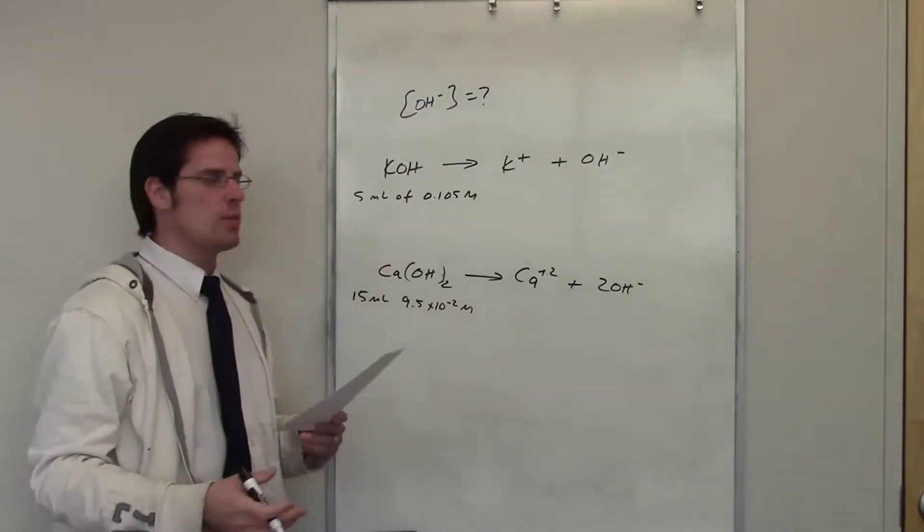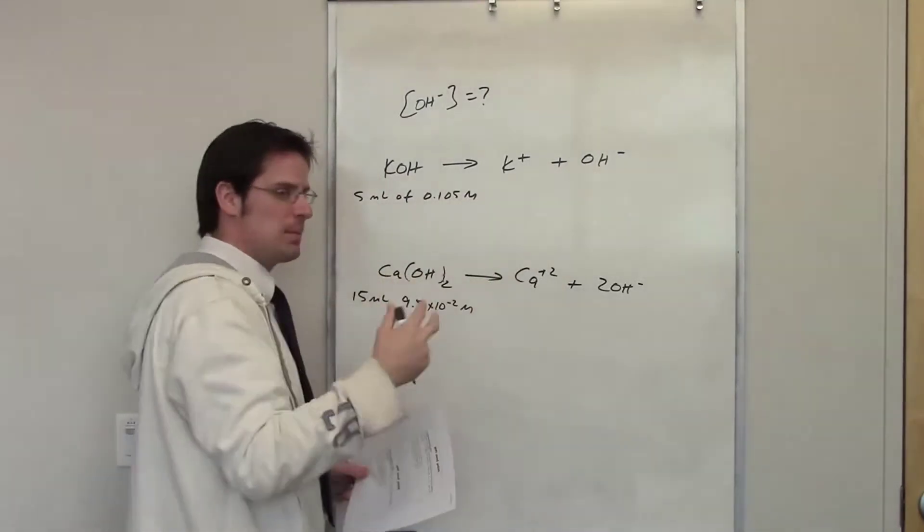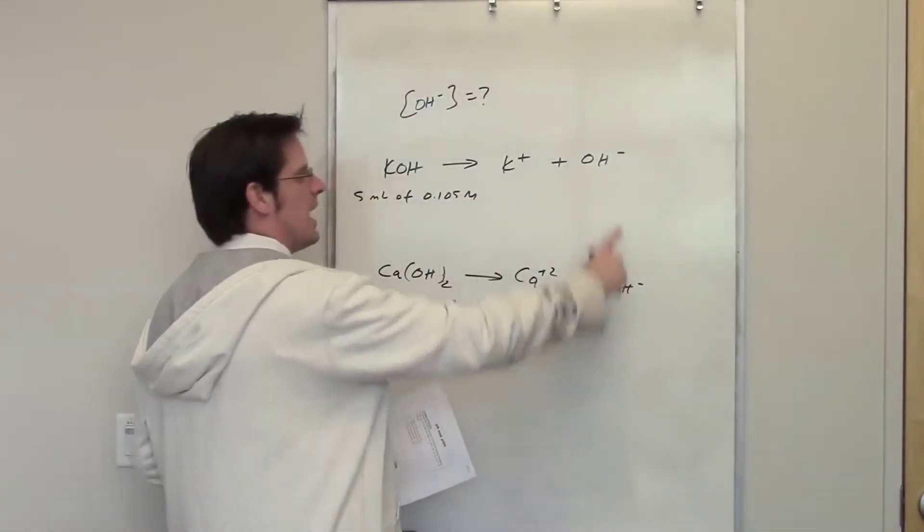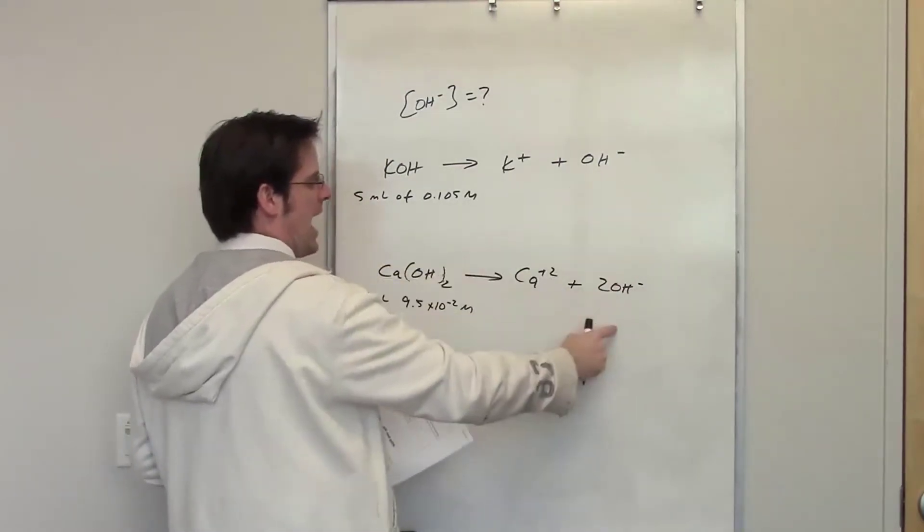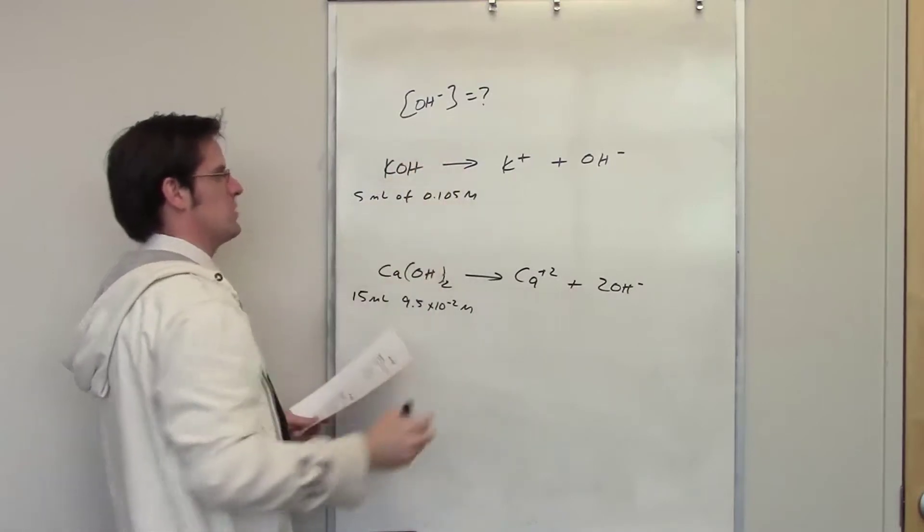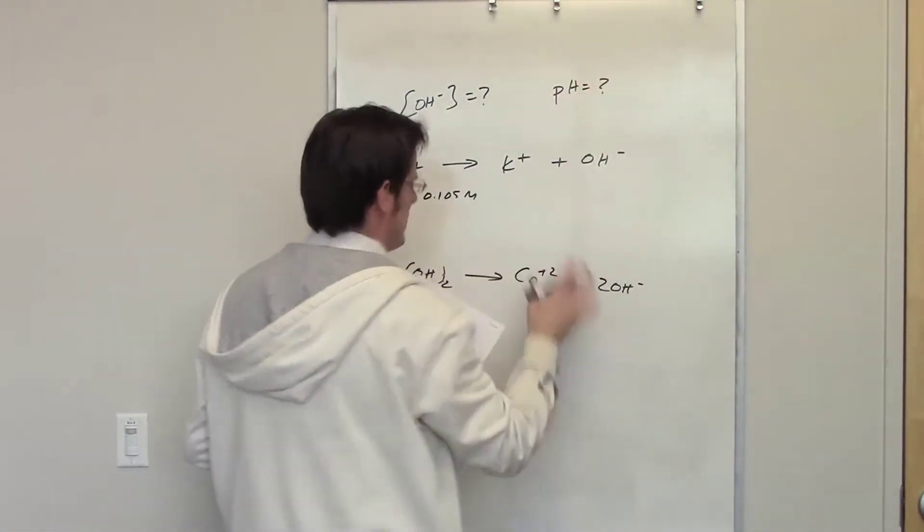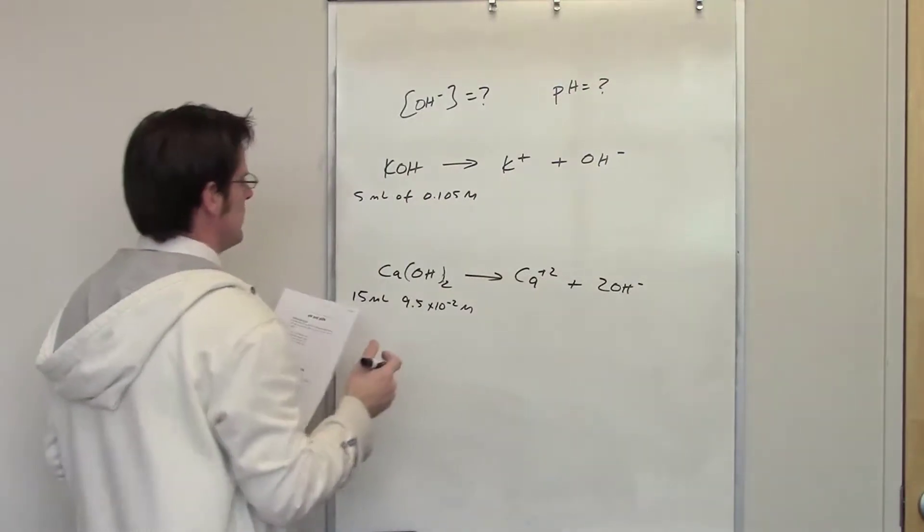What is the final concentration of hydroxide going to be? Well what I need to do is determine how much hydroxide is formed from the KOH, and then separately how much hydroxide is formed from the calcium hydroxide. I get the answer for this and this, I then add them together. That's the final concentration of hydroxide. It also asks me separately to figure out the pH which we can do in a heartbeat once we've got that done. So let's see if we can figure this out.